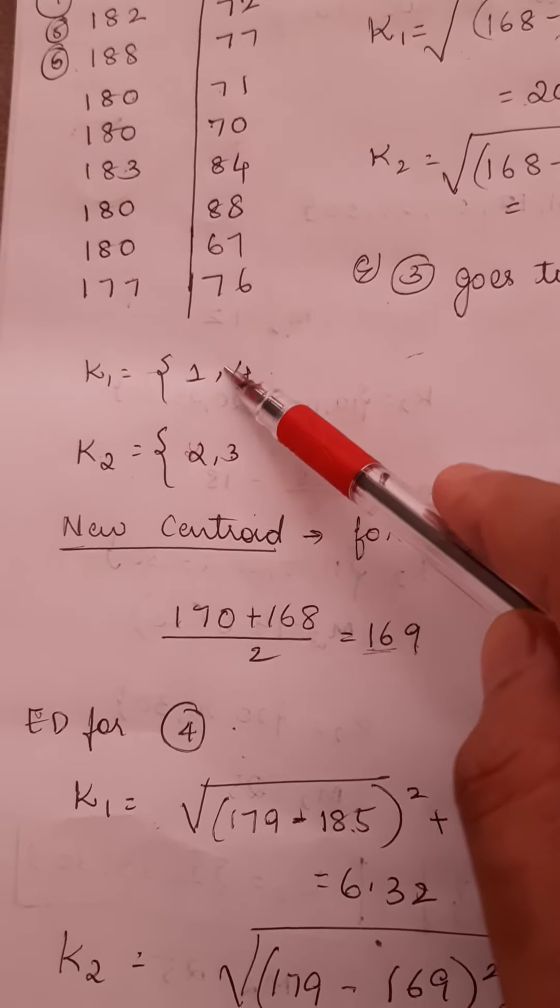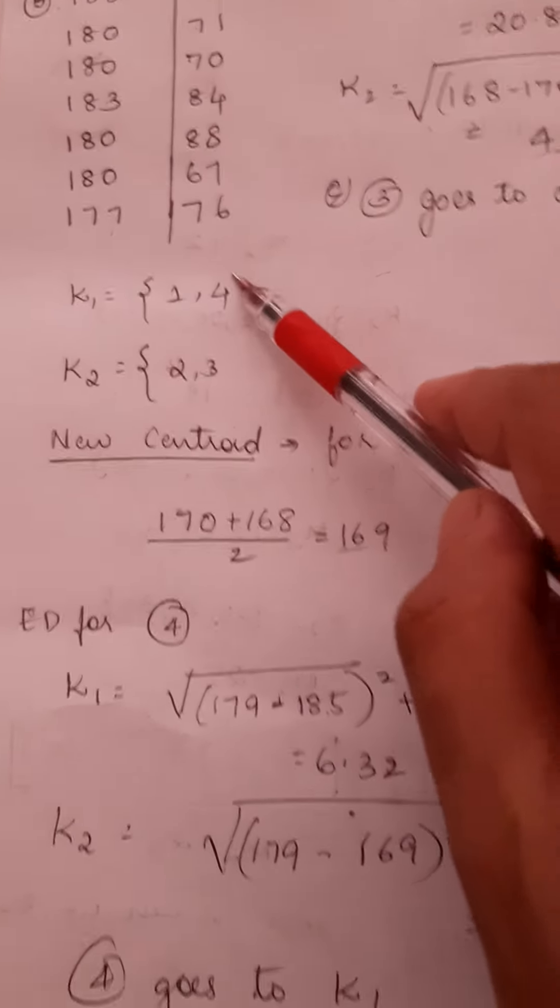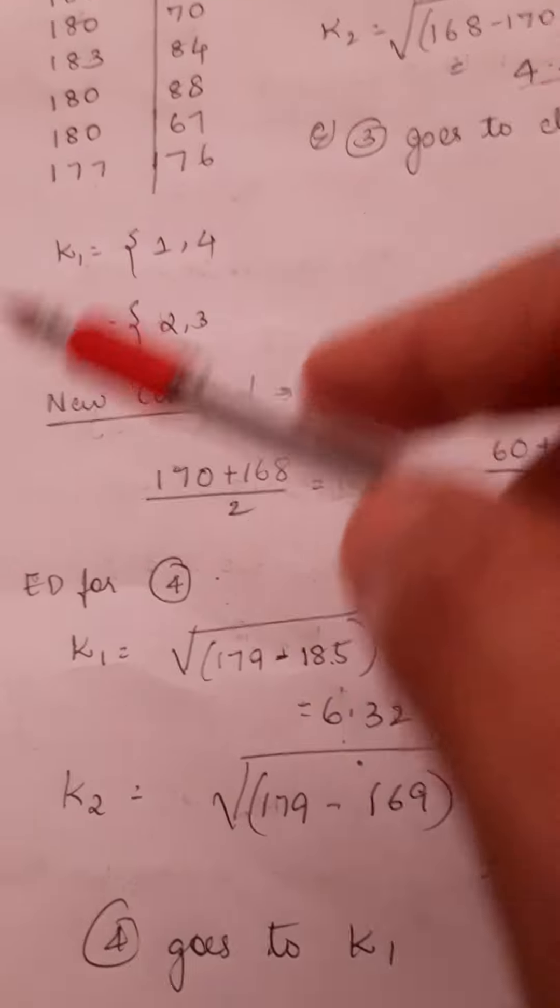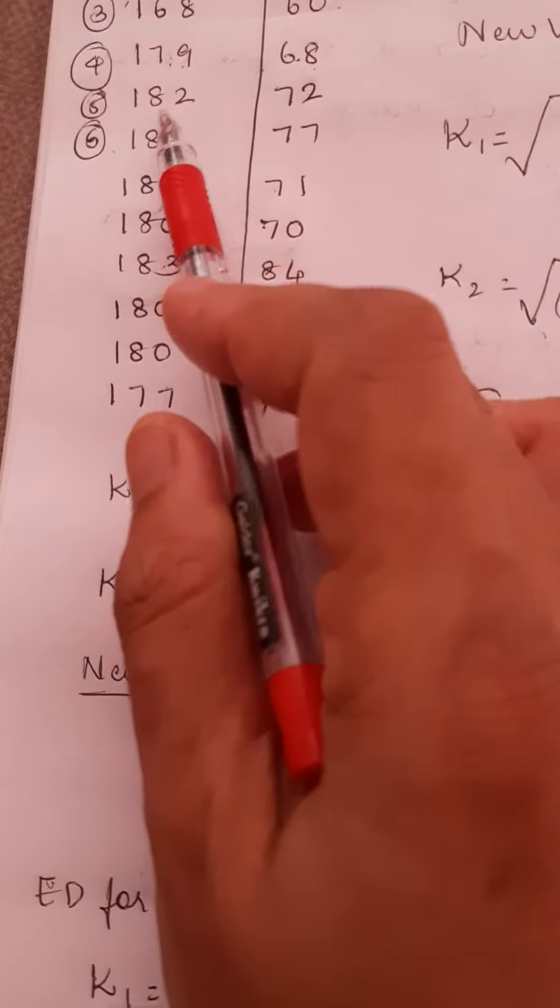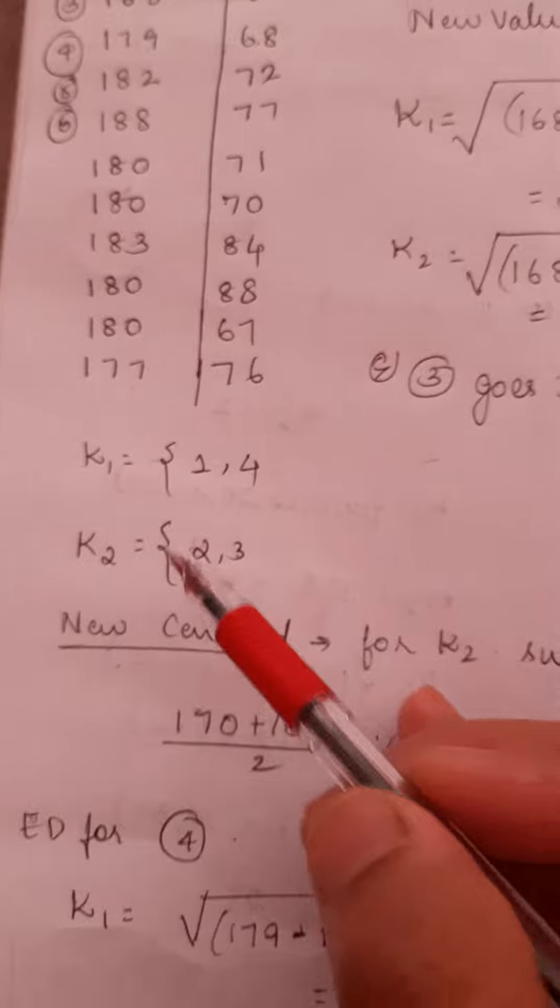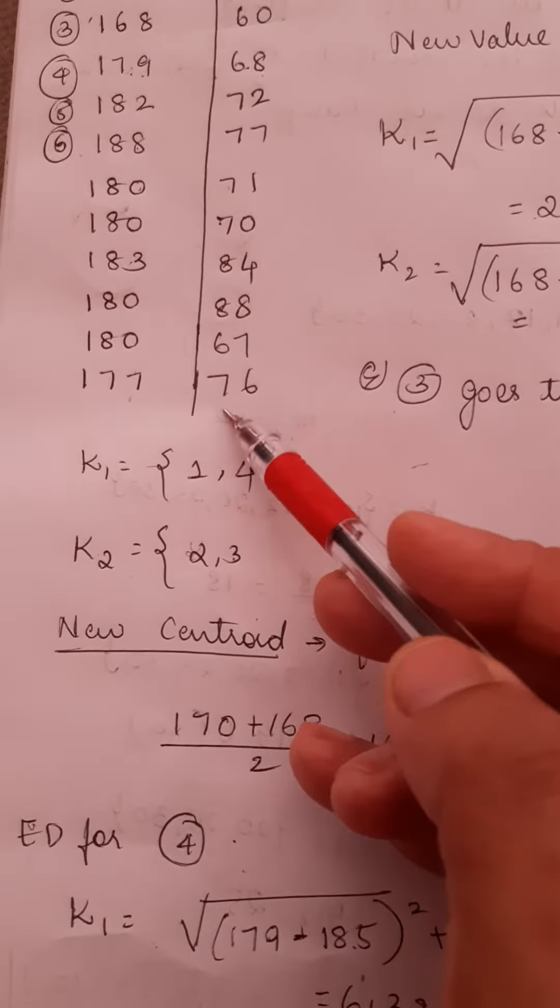the distance from the fifth row and the new K1 value. This way we repeat the process until all the rows are completed, and we get the two clusters K1 and K2.